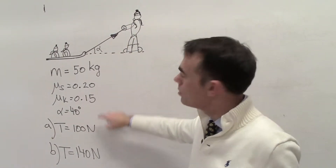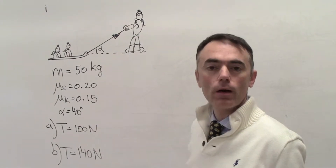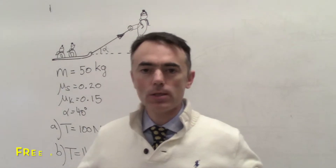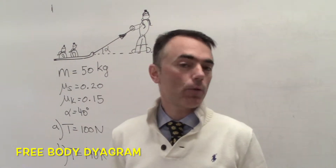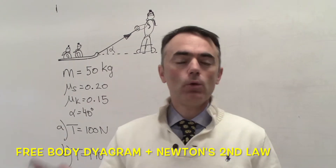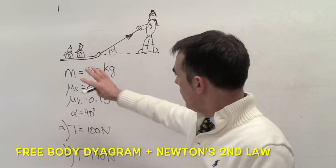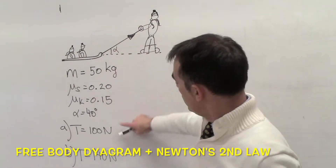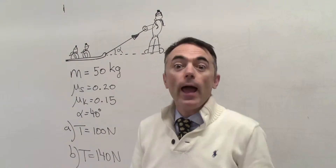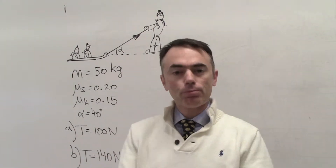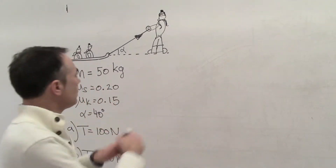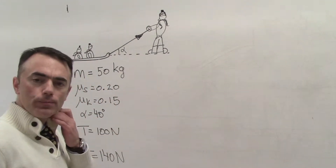Let's see what type of motion they have if this person is applying a tension of 100 newtons or 140 newtons. The first thing we always need to do with these types of exercises is draw the free body diagram. Once we have the free body diagram, we apply Newton's second law and do a balance of forces to see if the forces are large enough to overcome friction, and if so, calculate the acceleration.